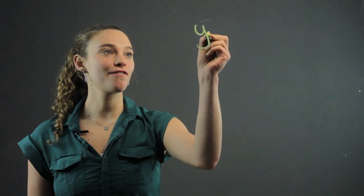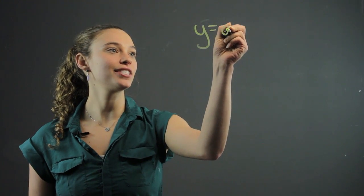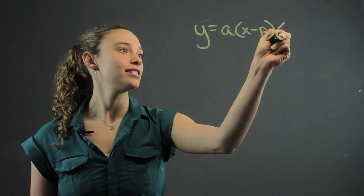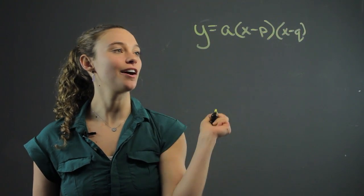When graphing quadratics, intercept form looks like this: y equals a times x minus p times x minus q.